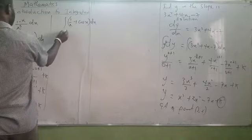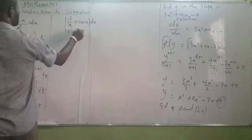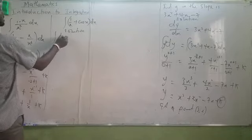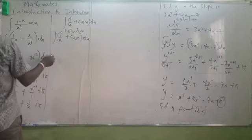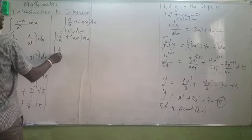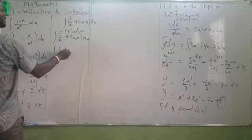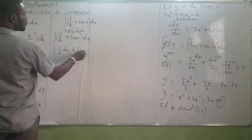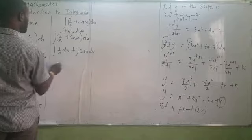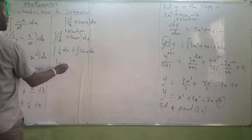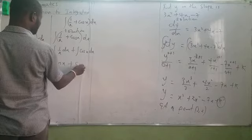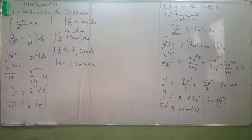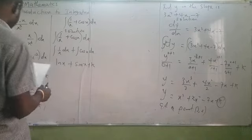Problem: evaluate the integral of (1/x + cos x) dx. This can be split as the integral of 1/x dx plus the integral of cos x dx, which gives ln|x| + sin x + k. That is the final answer.